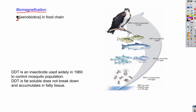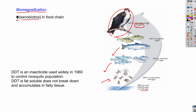Biomagnification is simply an increase in concentration of xenobiotics in the food chain. For example, planktons, which are producers, ingest about 0.003 parts per billion of DDT. But gradually, as fish consume them, and bigger fish eat the smaller ones, and the top predator — the bird — consumes those fish, the accumulation of DDT becomes 25 parts per million.